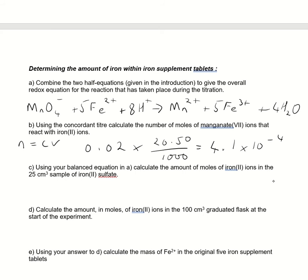Use your balanced equation to calculate the number of moles of iron within the 25 cubic centimeters. So for every 1 potassium manganate, 5 here. So all I would simply do, 4.1 times 10 to the minus 4, times by 5. So 2.05 times 10 to the minus 3.